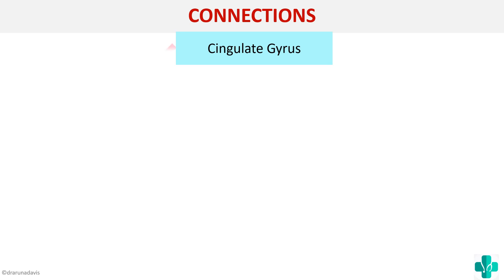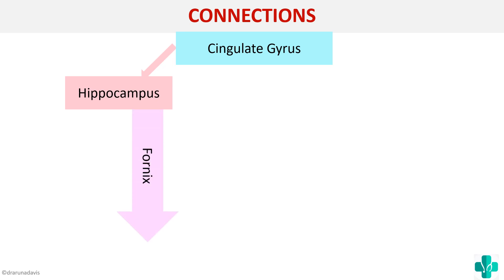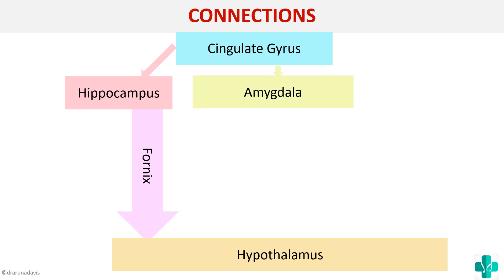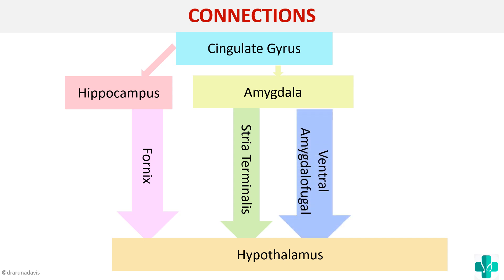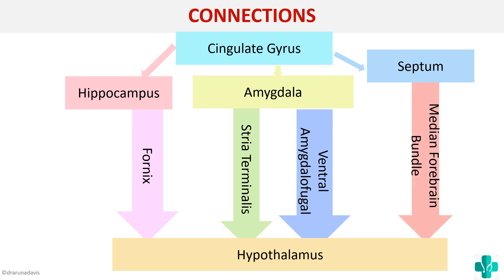The cingulate gyrus connects to the hippocampus, and the hippocampus in turn connects to the hypothalamus via the fornix. From the amygdala, there are connections to the hypothalamus via two routes: the first is called the stria terminalis, and the second is called the ventral amygdalofugal fibers. Then it connects to the septum via the median forebrain bundle.